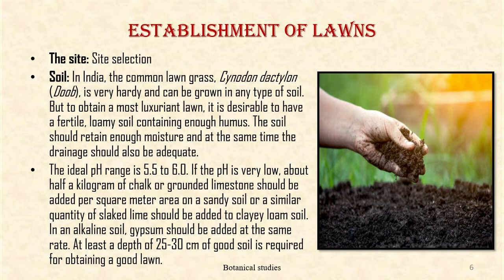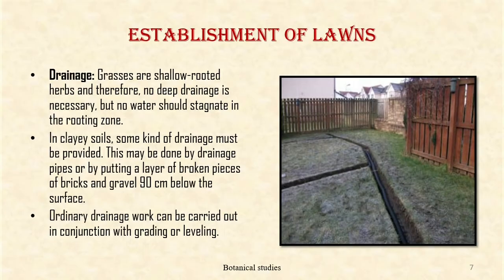At least a depth of 25 to 30 cm of good soil is required for obtaining a good lawn. Drainage: Grasses are shallow-rooted herbs and therefore no deep drainage is necessary, but no water should stagnate in the rooting zone. In clayey soils, some kind of drainage must be provided. This may be done by drainage pipes or by putting a layer of broken pieces of bricks and gravel 90 cm below the surface.